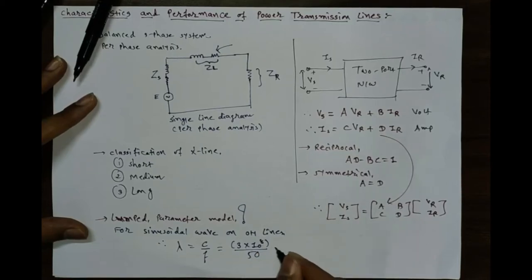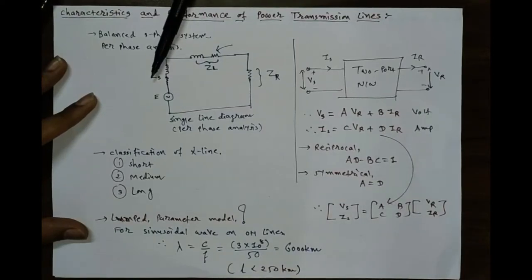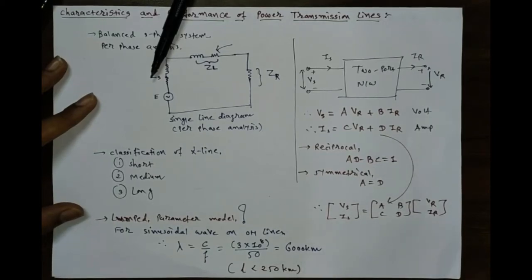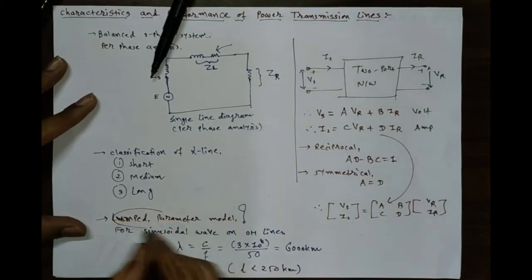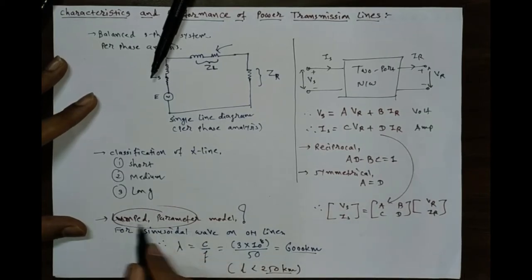The speed of the wave is approximately equal to the speed of light, that is 3 × 10⁸ meters per second, and the frequency is 50 Hz. So lambda = 3 × 10⁸ / 50 = 6000 km. Generally the length of a transmission line in India is somewhere around 250 km. Since the length is much less than 6000 km, we can neglect the distributed effect and it is sufficient to consider the lumped parameter model. That is why we are considering lumped parameters — the calculation would be more complex if we used the distributed model.